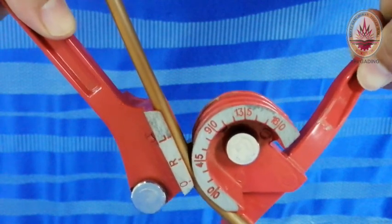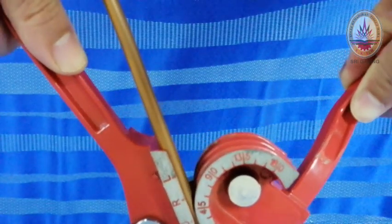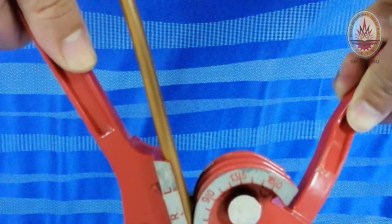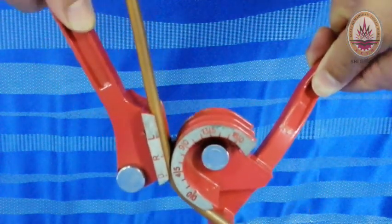So 45 means 45 degree. This is 45 degree bending.